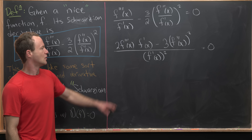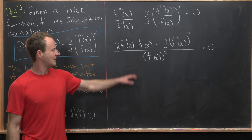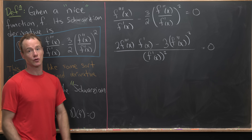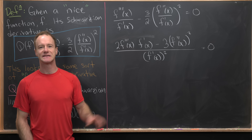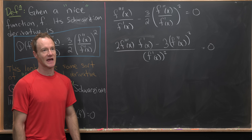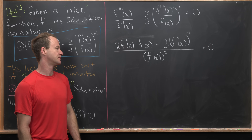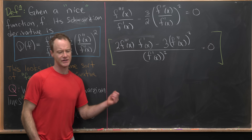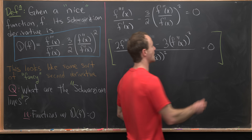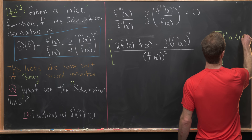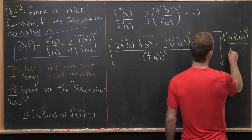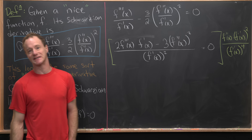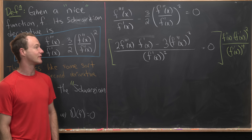Notice how this is shaping up: we have the difference of two things in the numerator and a squared denominator. This is starting to look like something that has had the quotient rule applied to it. The question is how to mold it into that useful form — and it's a bit tricky to get there. After some exploration, you'll see that multiplying the numerator by f double prime of x times f prime of x squared, and the denominator by f prime of x to the fourth power, puts us in the right place.